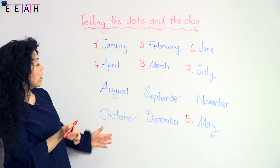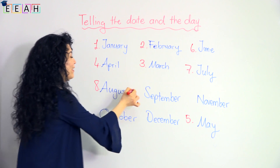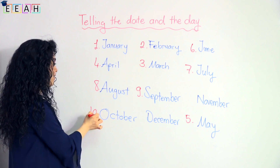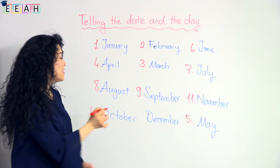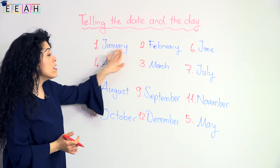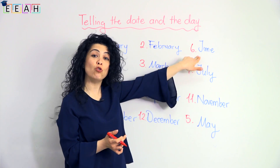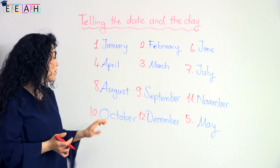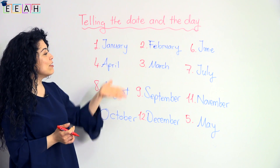What's after June? July. Then August. September, October, November. January, February, March, April, May, June, July, August, September, October, November, December. Yes, so these are the months of the year.